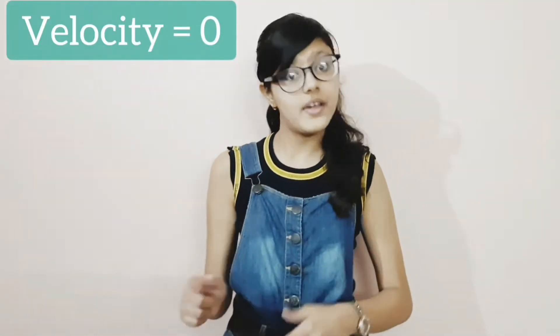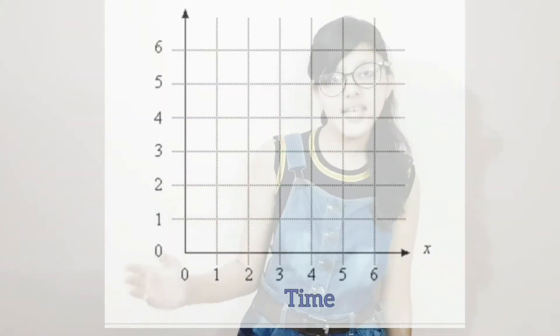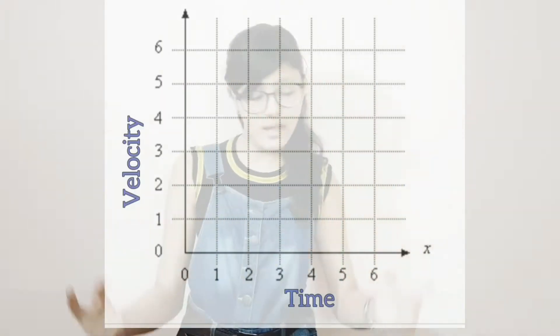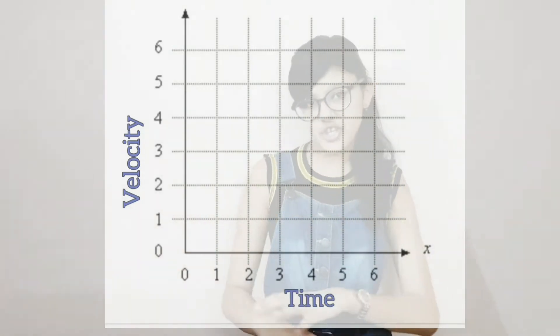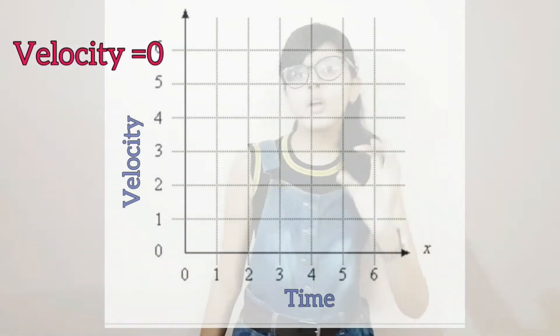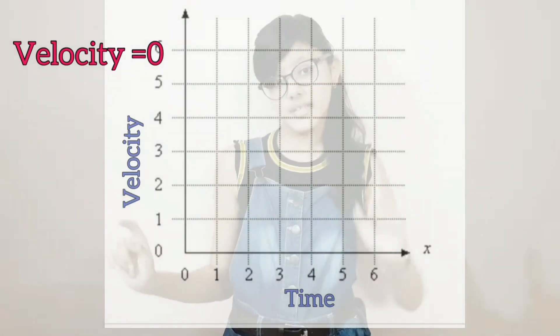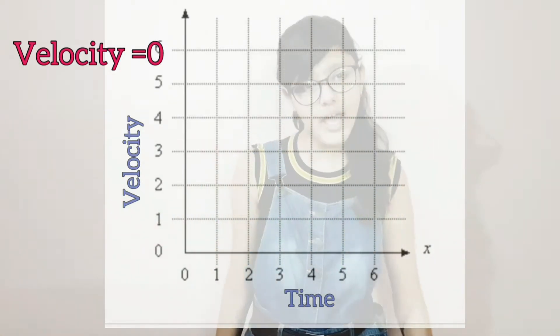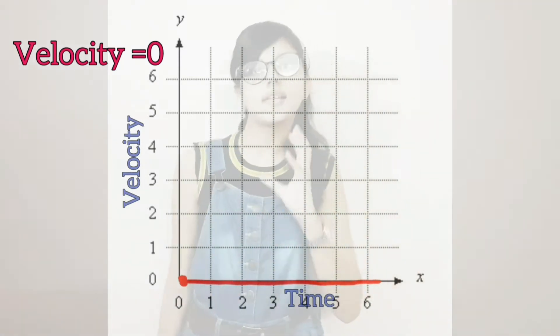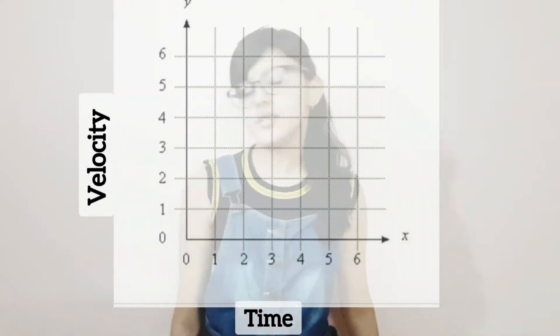Let's take an example. If somebody is not moving, their velocity is obviously zero. With time on the x-axis and velocity on the y-axis, if the velocity stays at zero while time keeps going on, the graph will be a straight line along the x-axis.